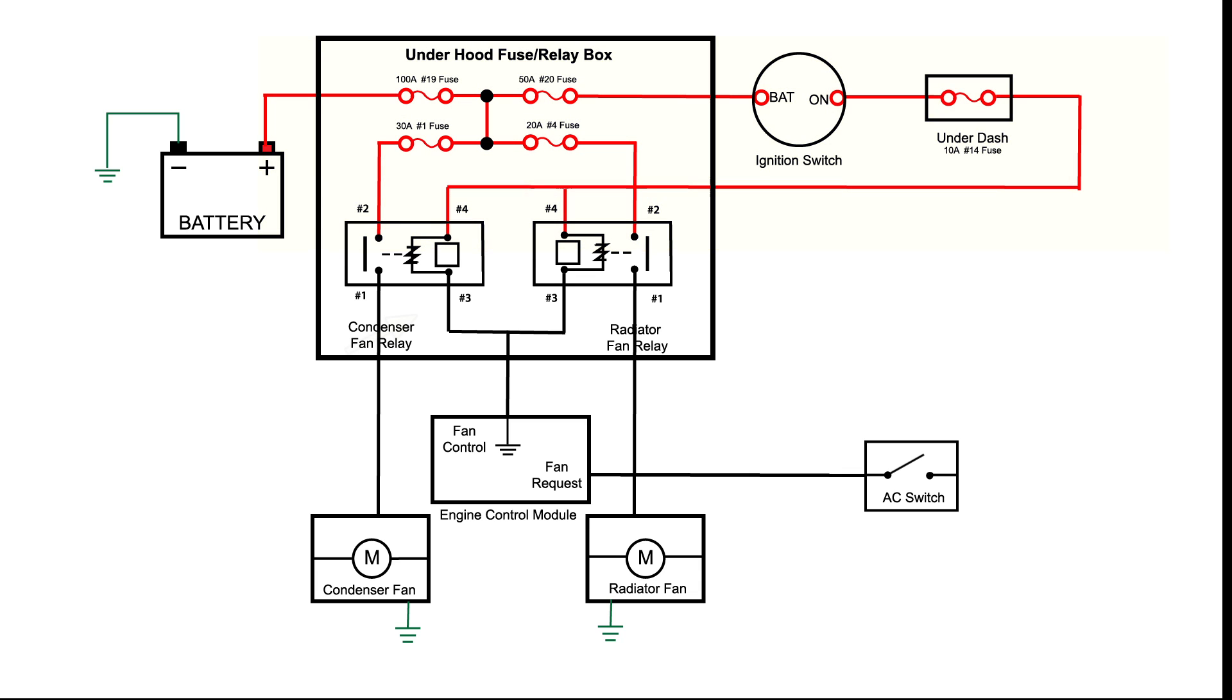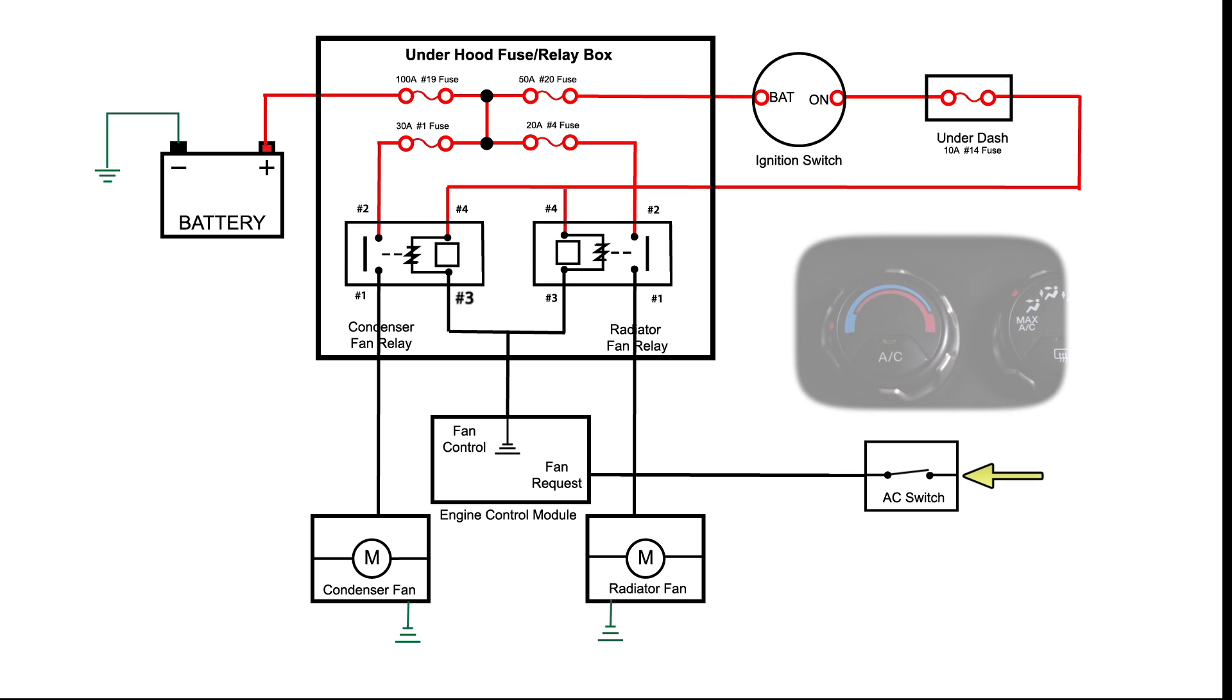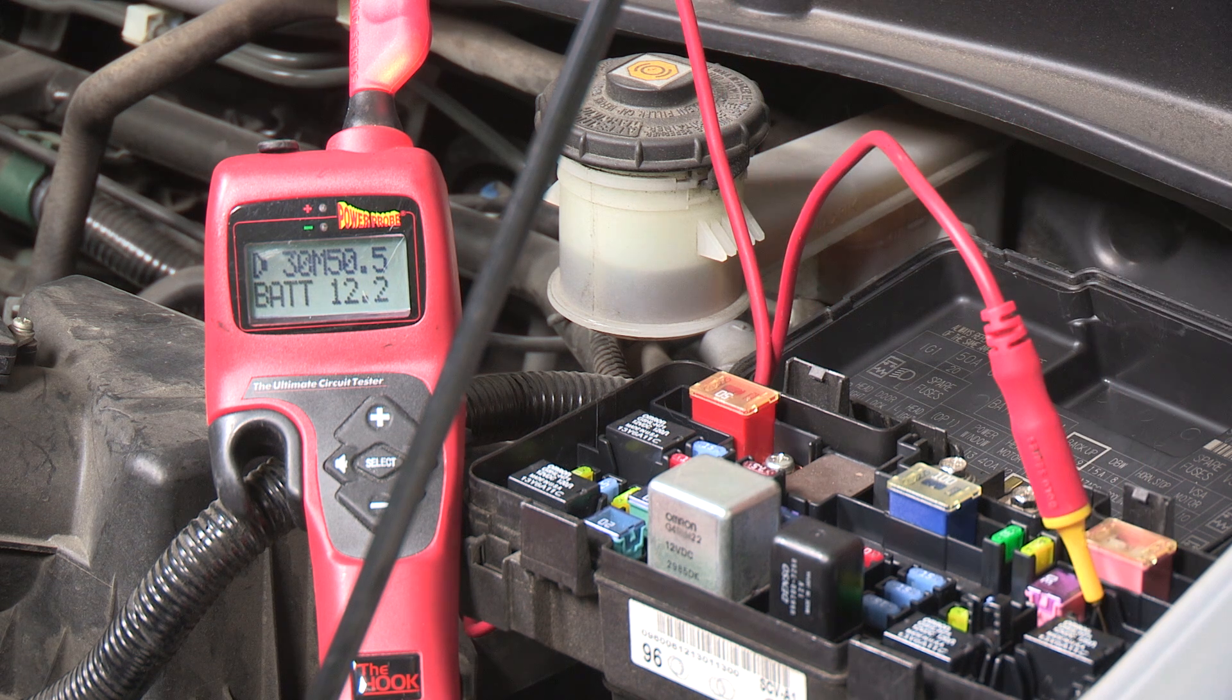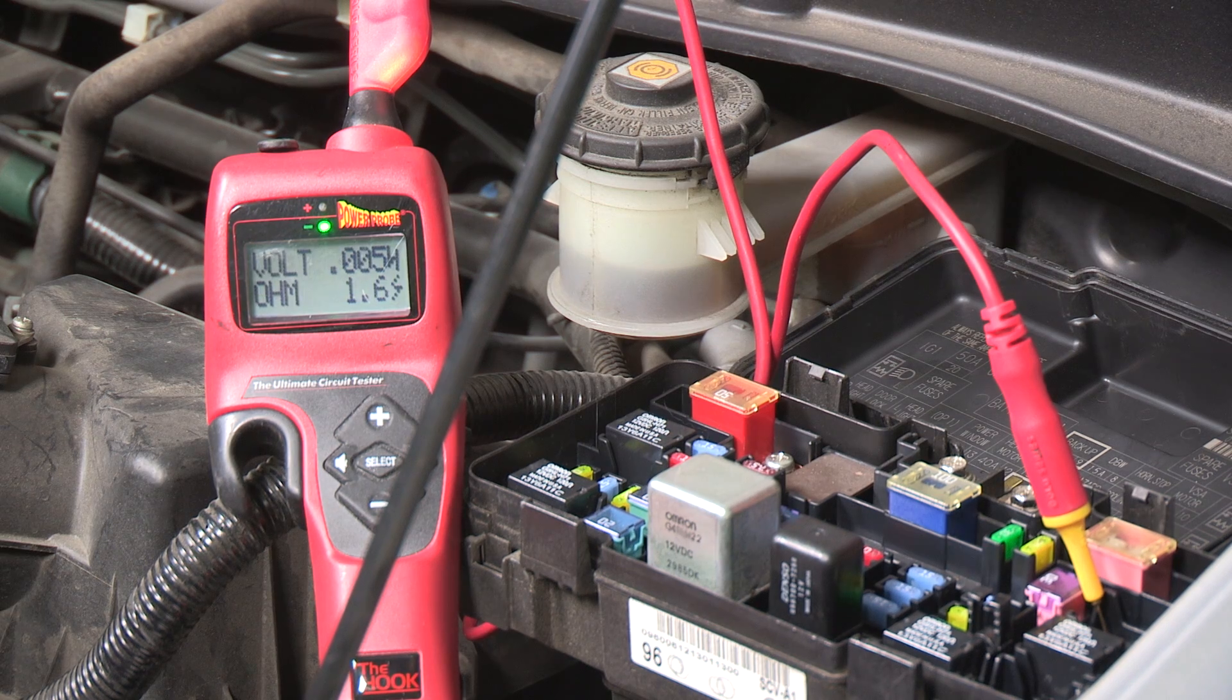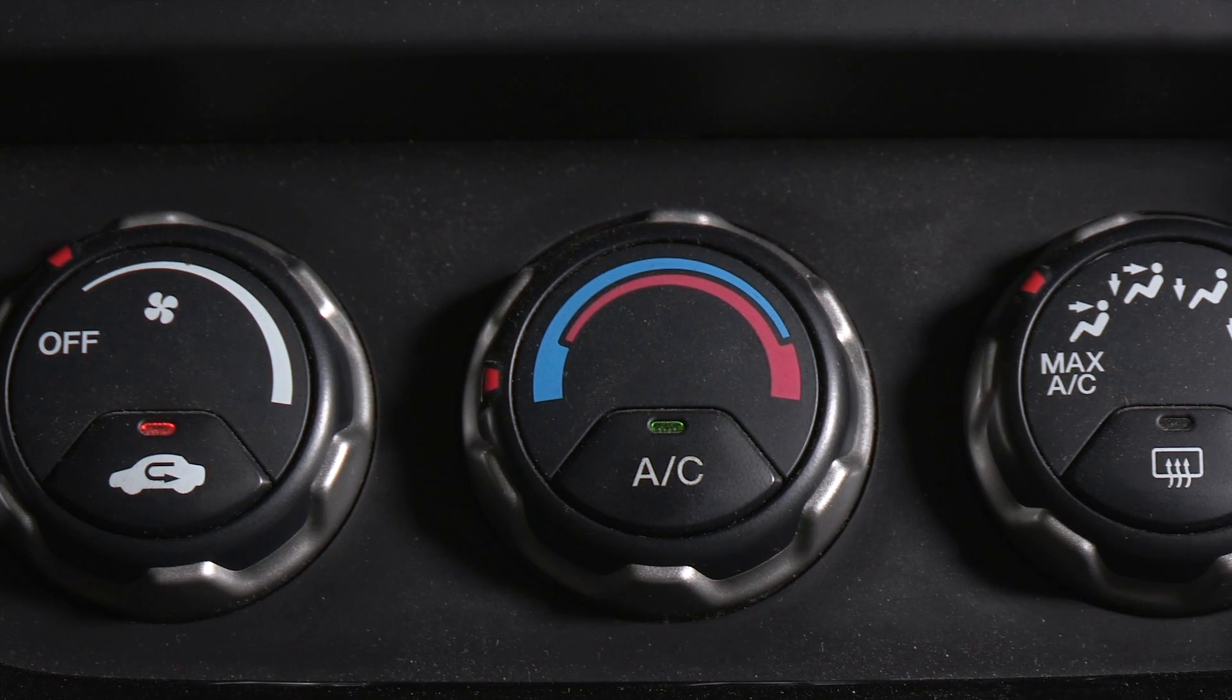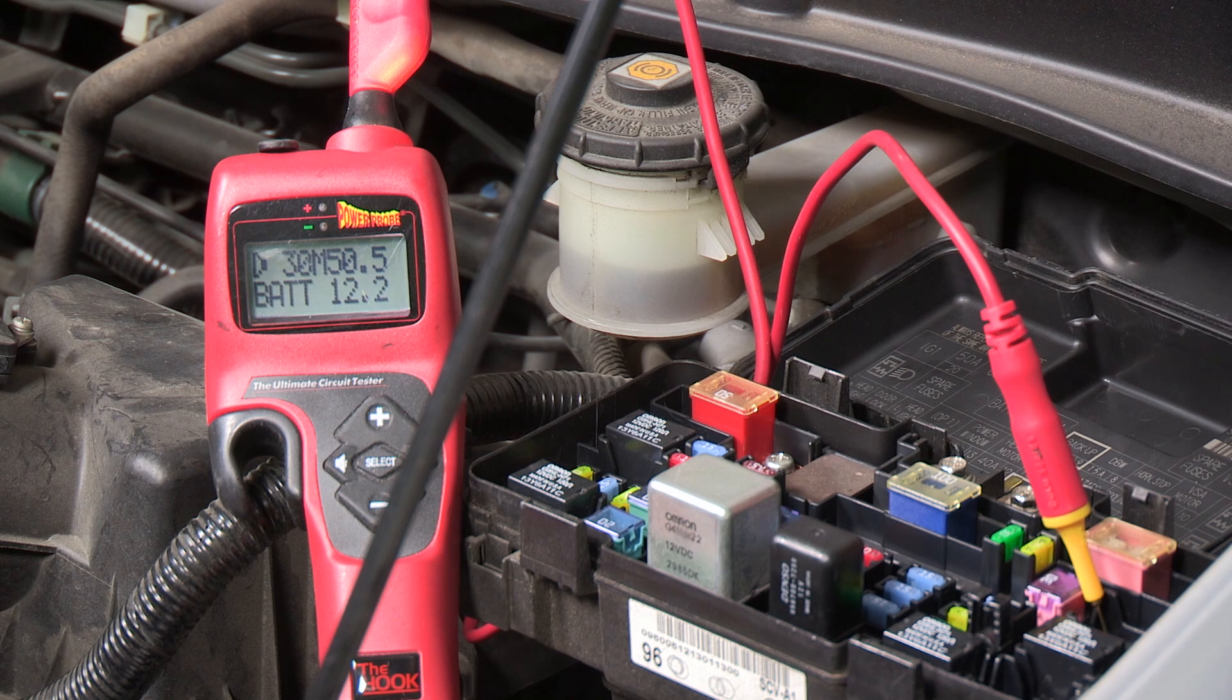Next, let's test relay Terminal 3. When the AC switch is pressed on, it sends a command to the engine control module to ground the condenser fan relay and the radiator fan relay. Let's test to see if this is working now. Probe the condenser relay terminal number 3, then push the AC control switch to the on position. The hook shows ground, indicated by the green LED. Now push the AC switch in the off position. The hook's green LED turns off.